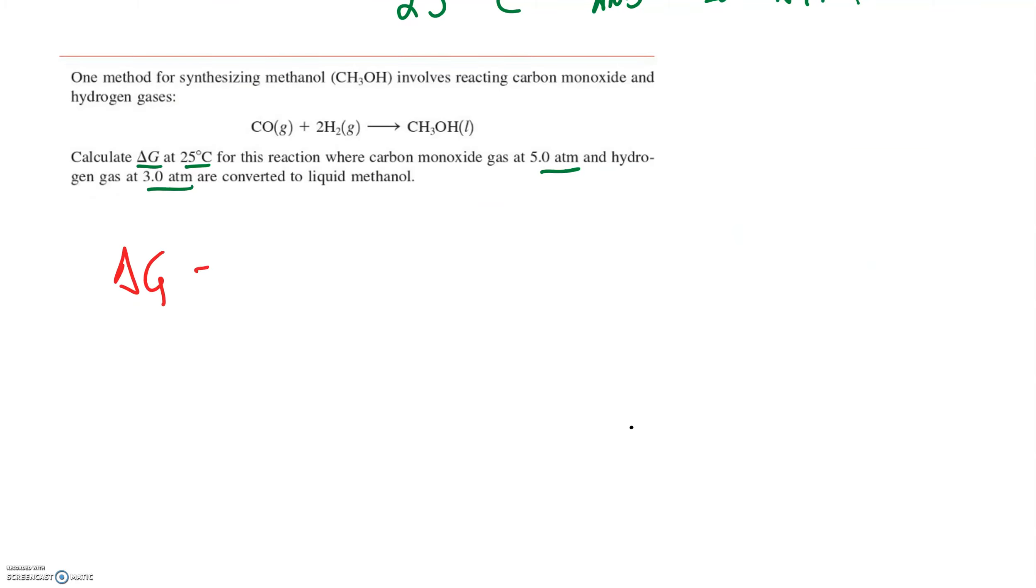The new delta G is equal to the old standard delta G plus RT times ln of something that we remember called Q. This is going to tell us what changes we've made to temperature, to pressure, what these do to our spontaneity. Let's take a look at this guy, Q.